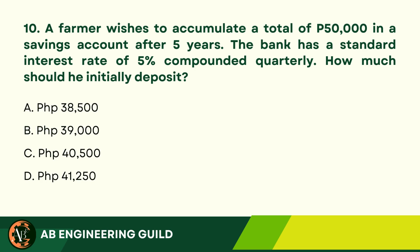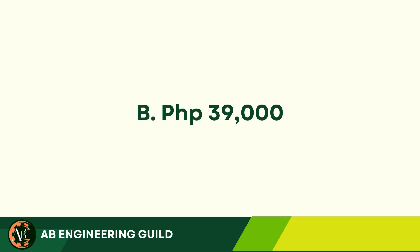Question 10: A farmer wishes to accumulate a total of P50,000 in a savings account after 5 years. The bank has a standard interest rate of 5% compounded quarterly. How much should he initially deposit? A. P38,500. B. P39,000. C. P40,500. D. P41,250. Answer: B. P39,000.